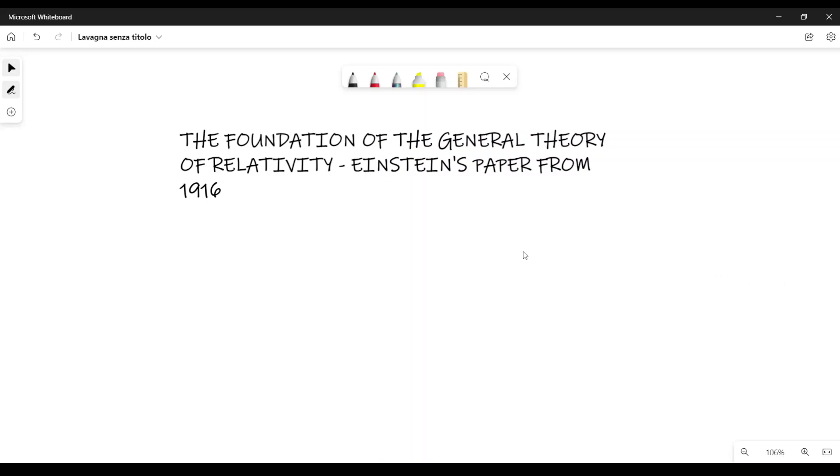This is an excerpt of the paper called The Foundation of the General Theory of Relativity by Einstein. It's a paper from 1916, the first fundamental paper related to the theory of general relativity.